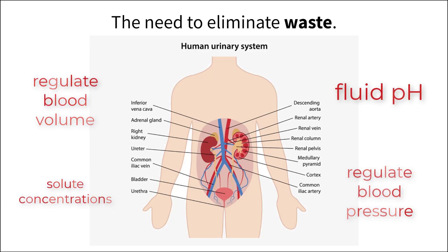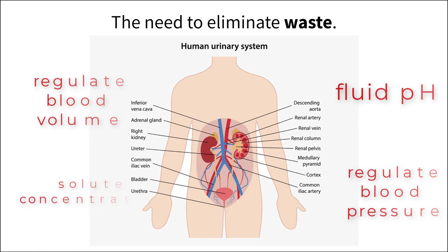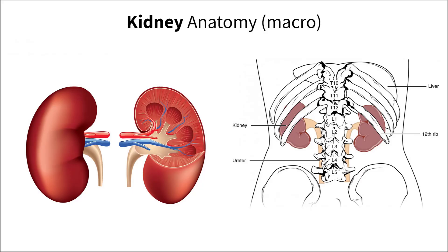To comprehend how the physiology of the kidneys work, we first need to understand the anatomical structures that make up these organs. The kidneys are located on either side of the vertebral column starting around the 12th thoracic vertebrae and are posterior to the other well-known abdominal organs.